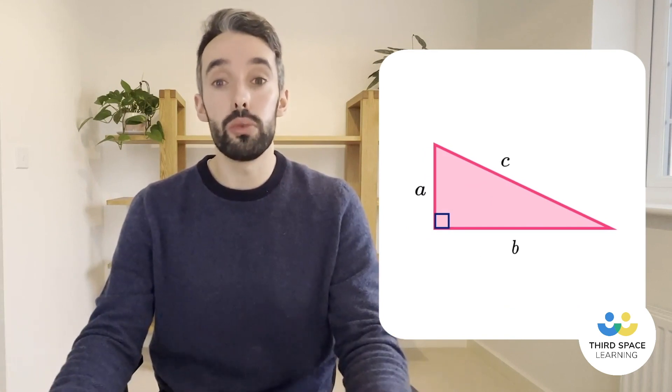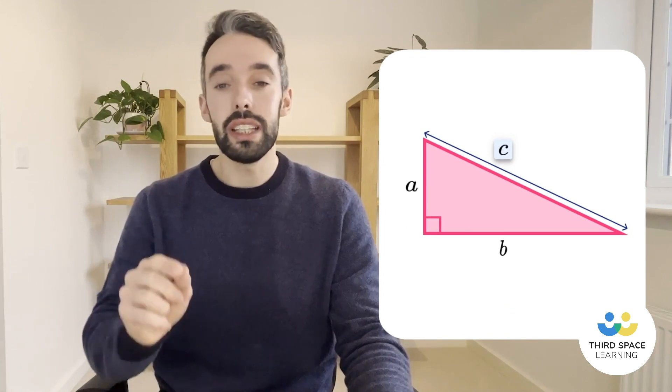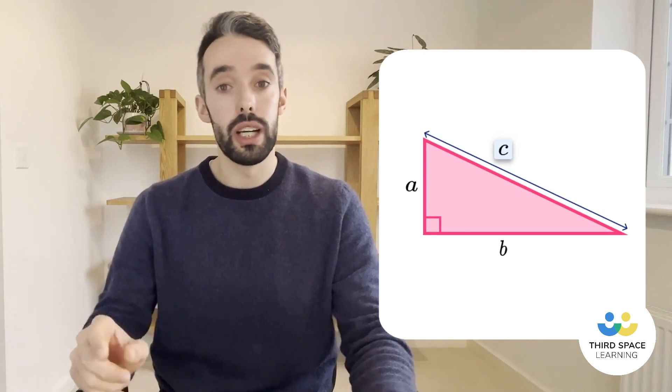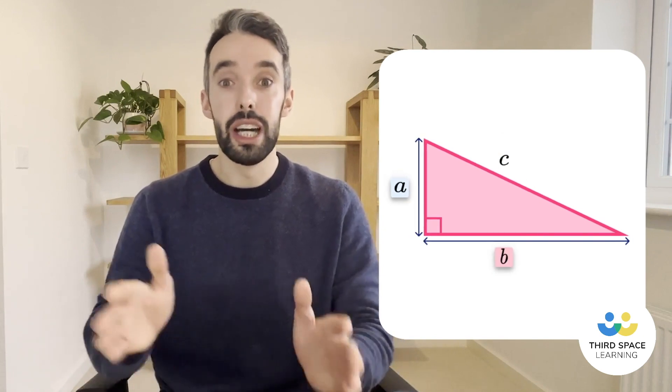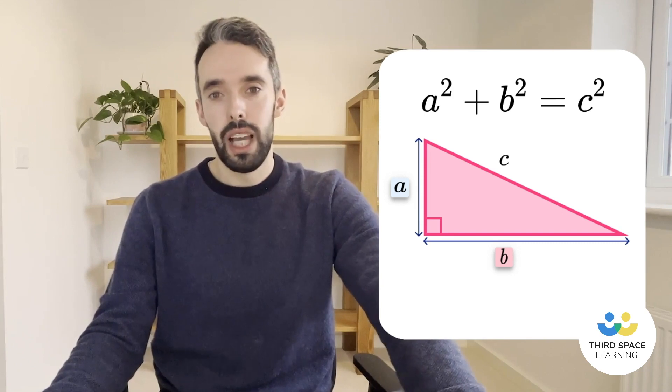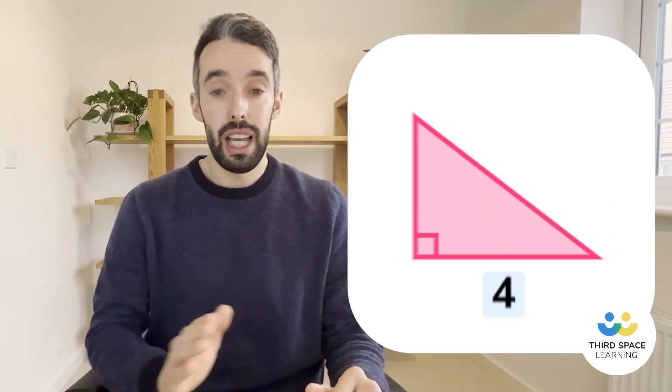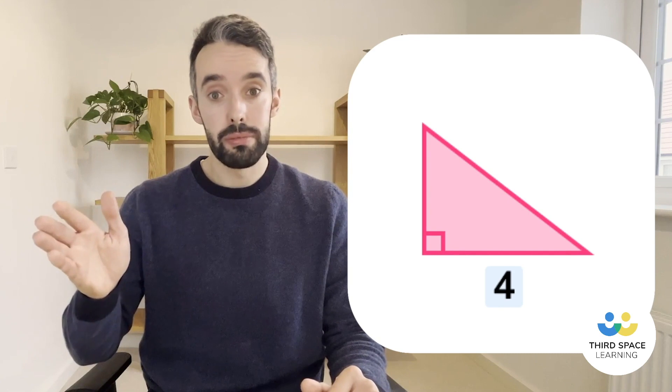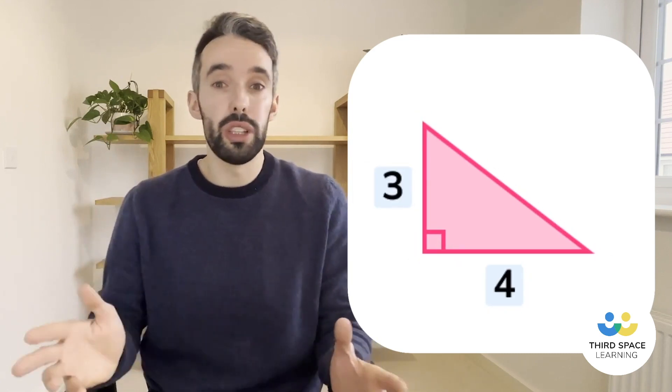Pythagoras' theorem says that the square of the longest side of a right-angled triangle is equal to the sum of the squares of the other two sides. a squared plus b squared equals c squared. Okay, let's have a look at this then in a little more detail. So we have a triangle. We've got a length of four and a height of three and we want to work out the longest side so let's call it c.